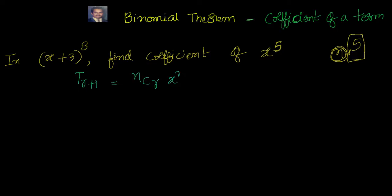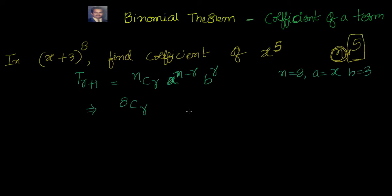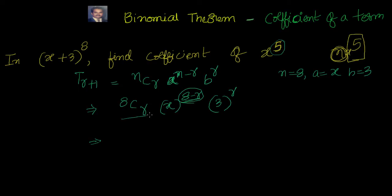The generic term is nCr, a to the power of n minus r, b to the power of r. Now let's substitute: n equals 8, a equals x, b equals 3. So the generic term becomes 8Cr, x to the power of 8 minus r, into 3 to the power of r.